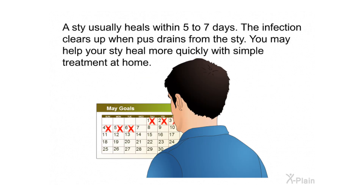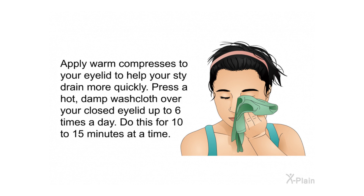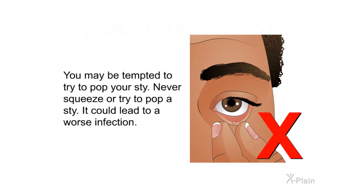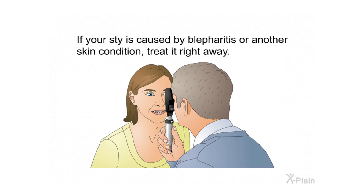A stye usually heals within five to seven days. The infection clears up when pus drains from the stye. You may help your stye heal more quickly by applying warm compresses to your eyelid. Press a hot damp washcloth over your closed eyelid up to six times a day, for 10 to 15 minutes at a time. You should also gently scrub your eyelid with mild soap, water, and a clean washcloth. Do not use eye makeup, and do not wear contact lenses to avoid spreading the infection. Never squeeze or try to pop a stye — it could lead to a worse infection.